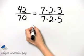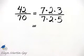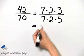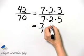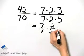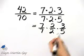Now remember why we are able to divide out common factors. It's because we are essentially removing factors of 1. In other words, this is equal to 7 over 7 times 2 over 2 times 3 over 5.